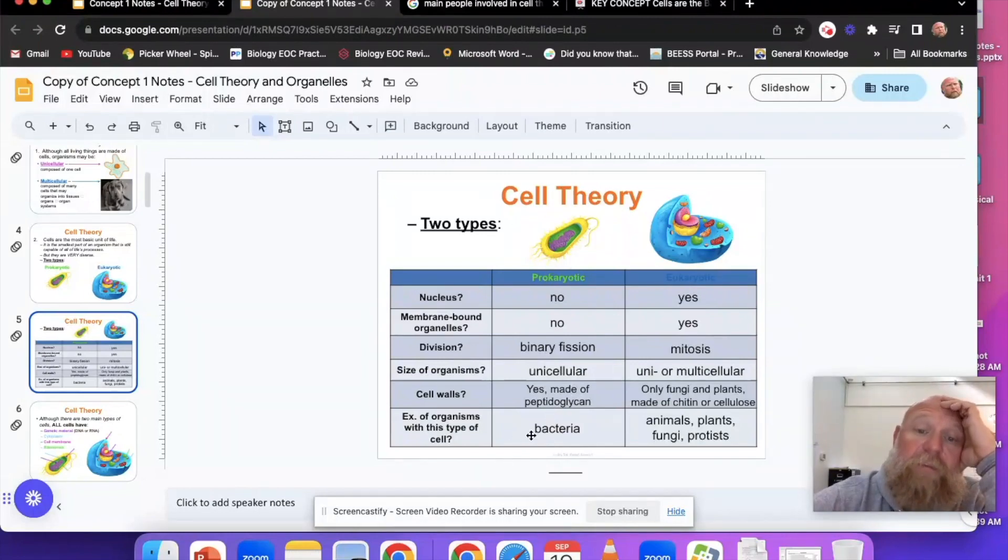Eukaryotic cells do have a nucleus and have membrane-bound organelles. The way the cell divides and creates other cells is through mitosis. Eukaryotic cells can be multicellular or unicellular. The size of an organism could just be one cell, like a red blood cell, or multicellular like you and I, or a skin cell.